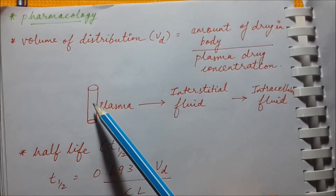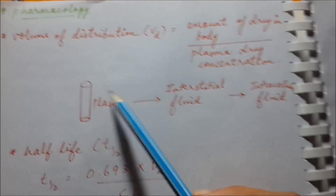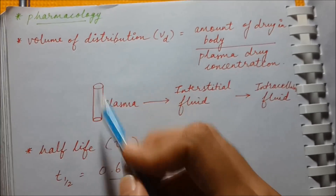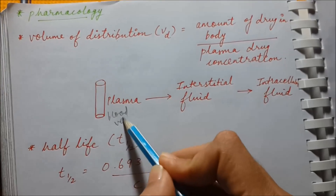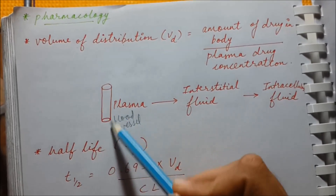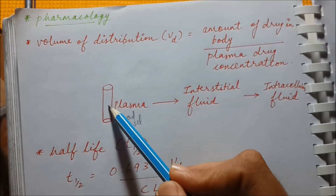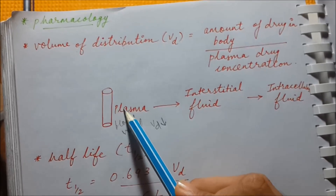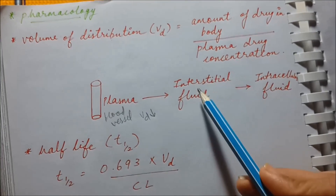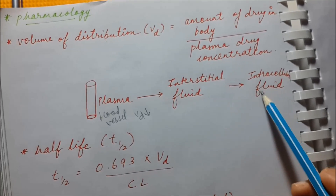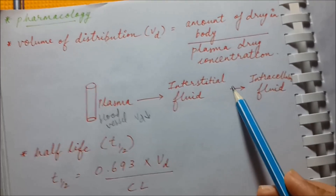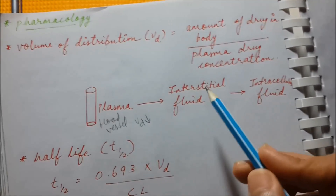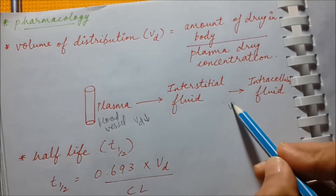Volume of distribution means in how much volume the drug spreads. If the drug remains confined to the plasma — that is, if the drug remains confined to the blood vessel — then its volume of distribution is low. If the drug moves from plasma into interstitial fluid and then into intracellular fluid, it means it has a higher volume of distribution — it is distributing widely.